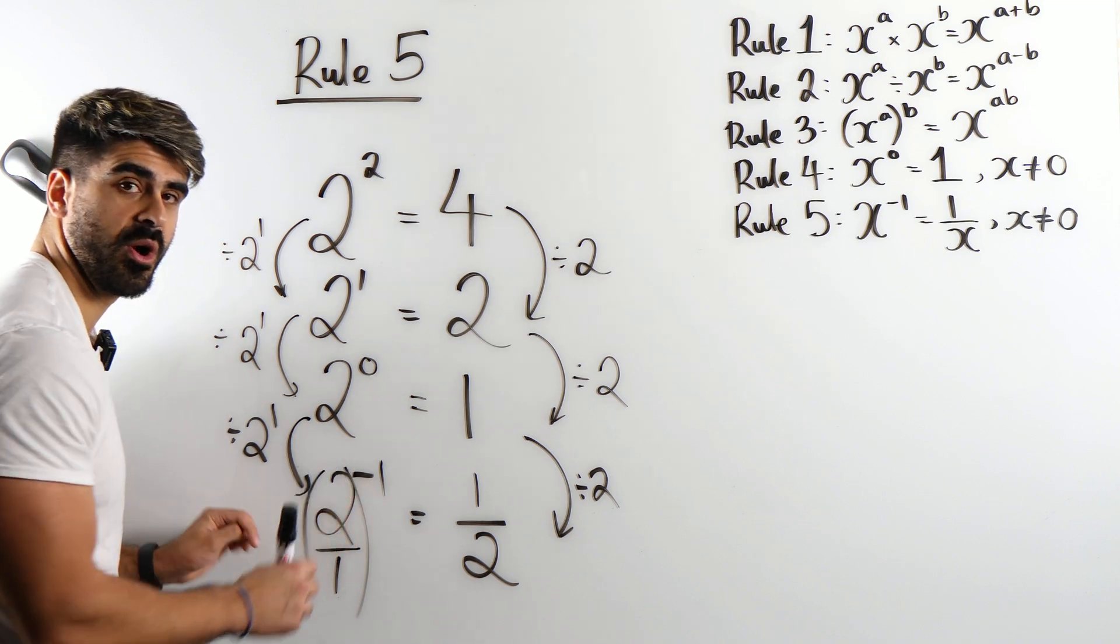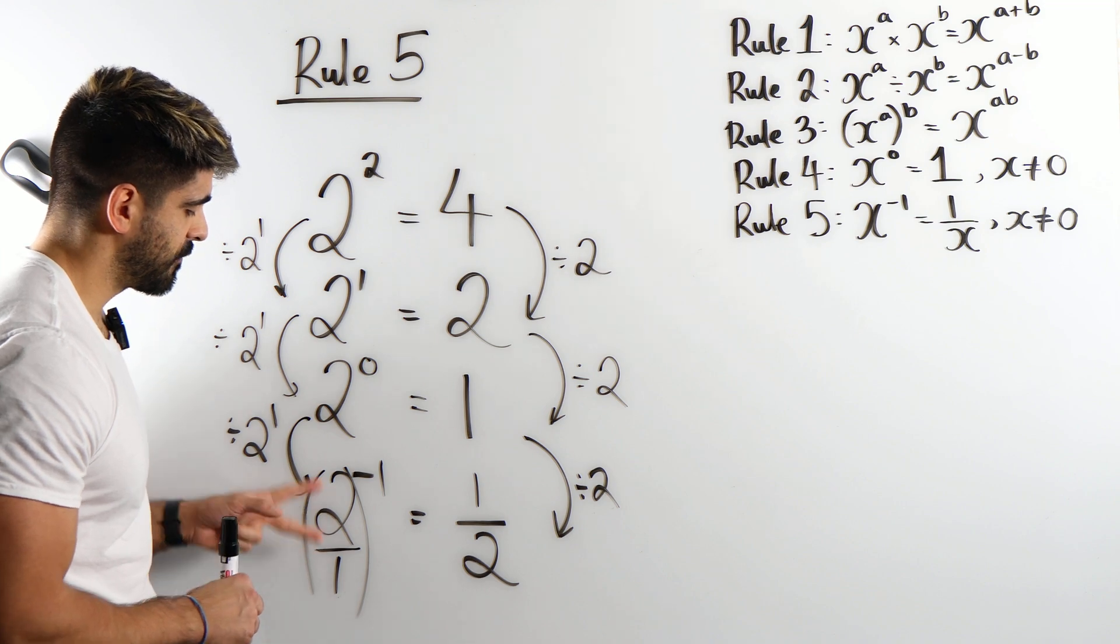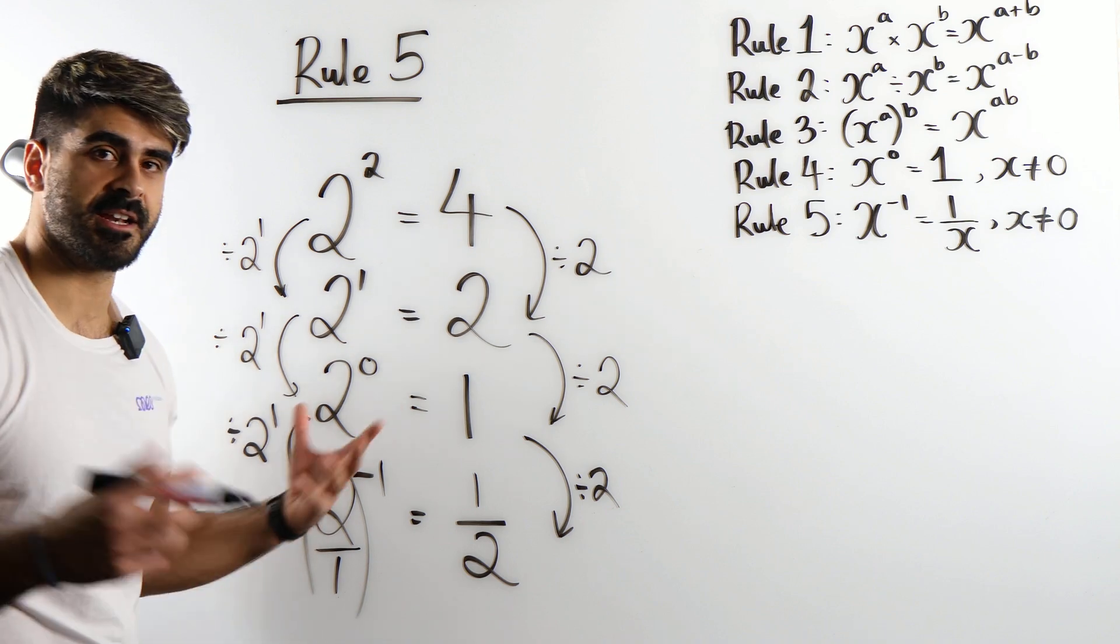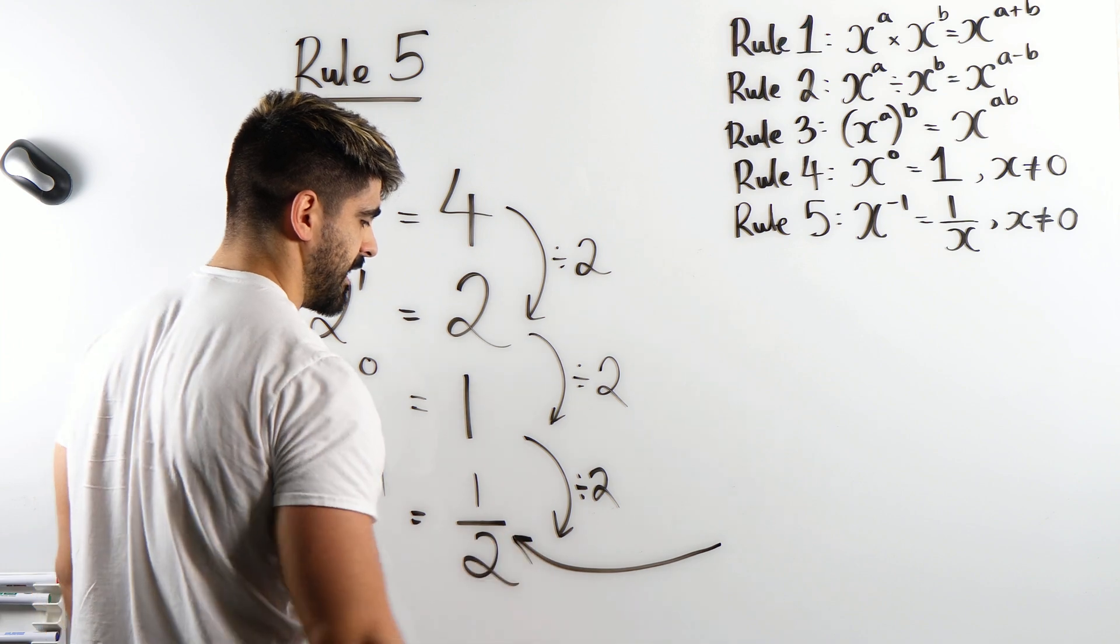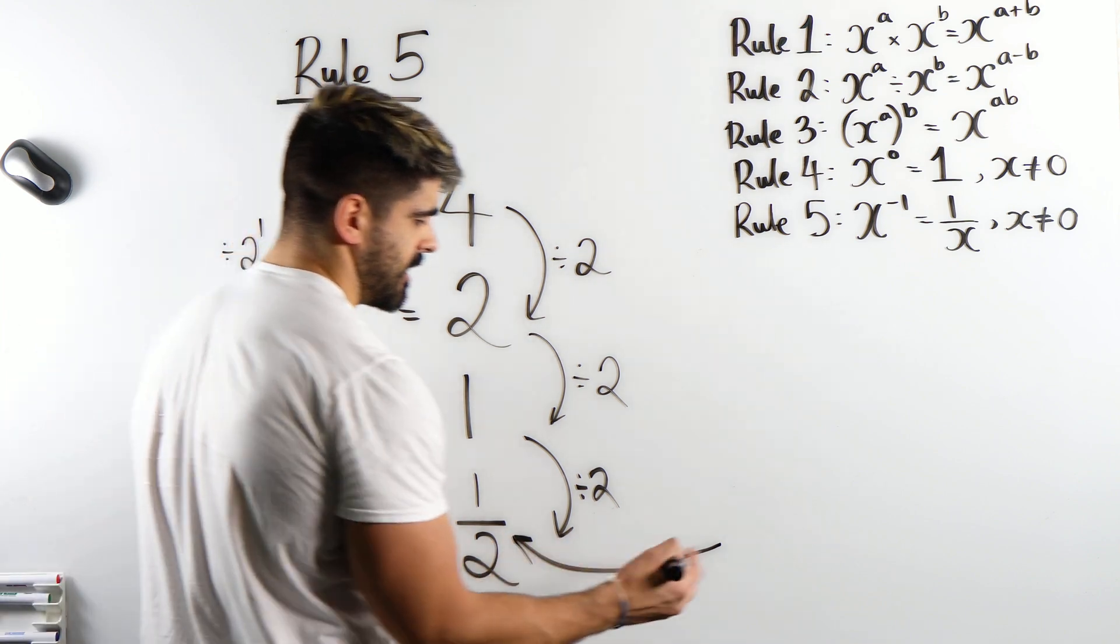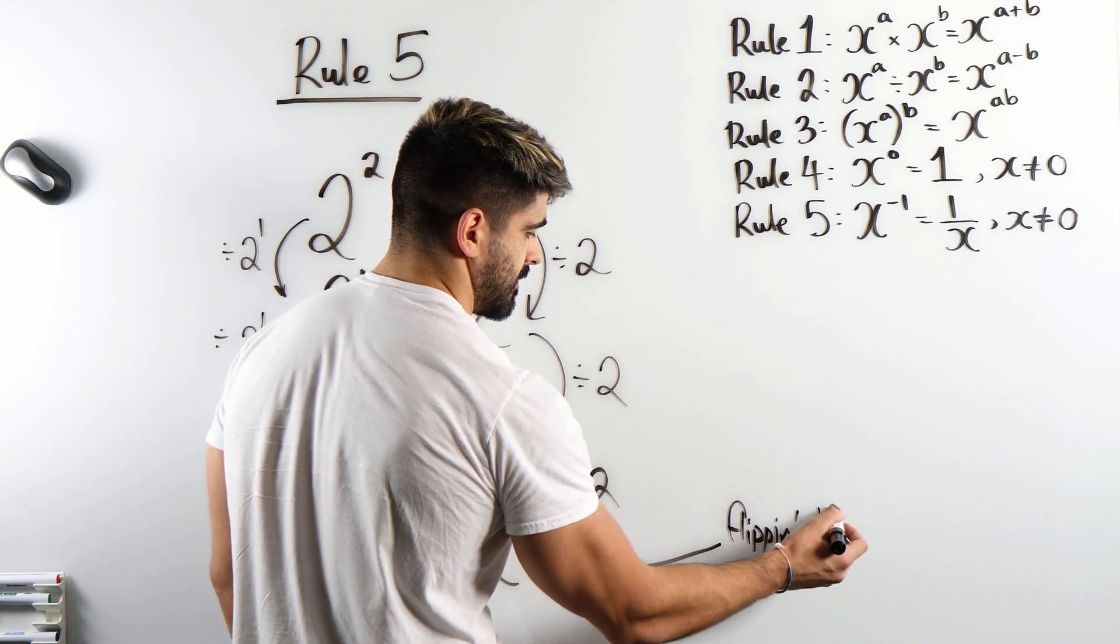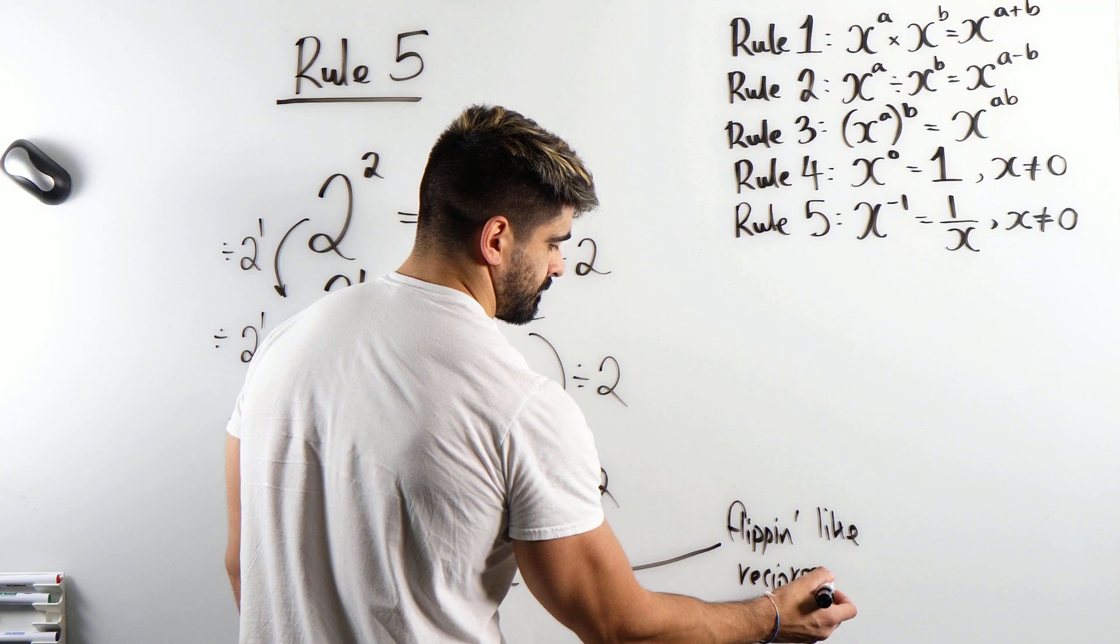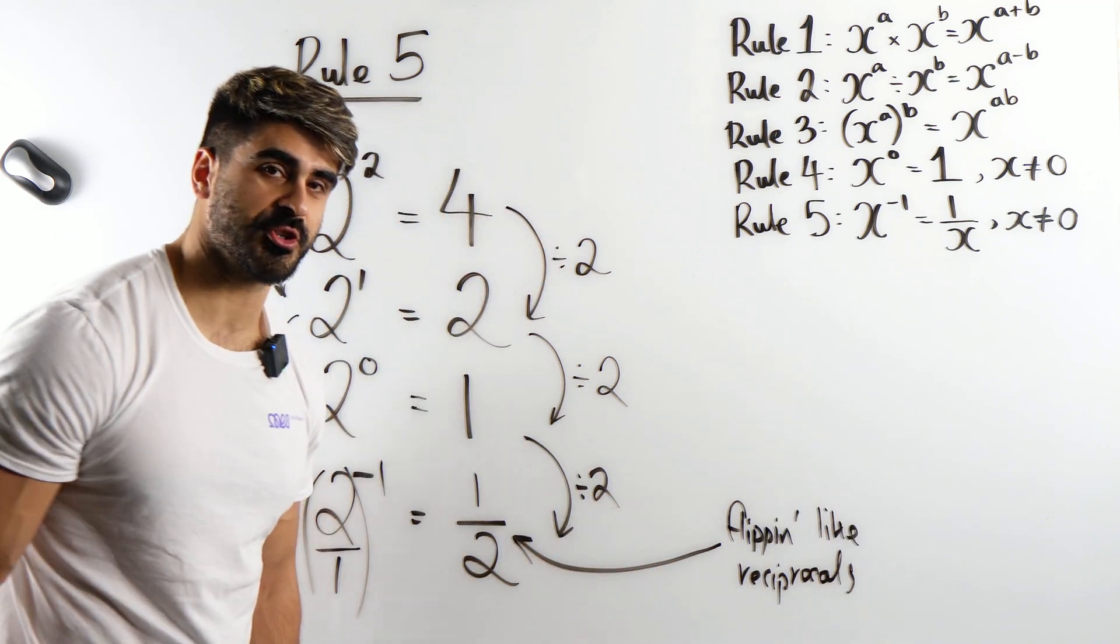So just remember power minus 1, it does not multiply this number by negative. It flips, it switches the numerator and denominator. And a nice way to remember this is the way I teach my GCSE students at MyEdgeSpace is, I say, flipping like reciprocals, which is a famous line from J. Cole's Lost Ones.